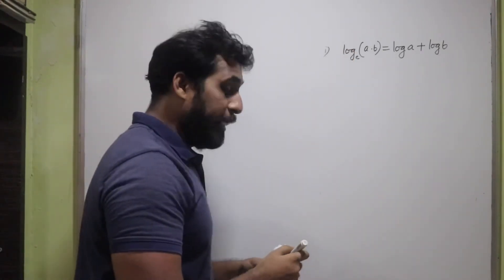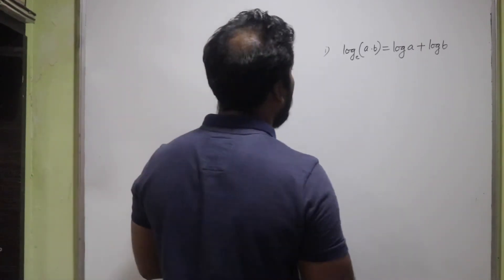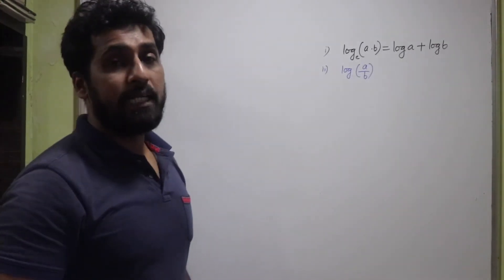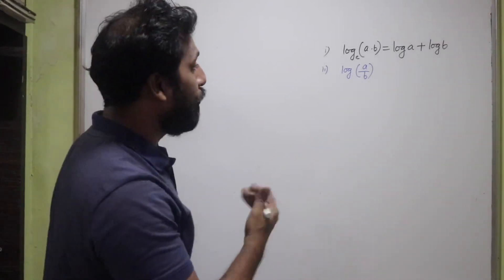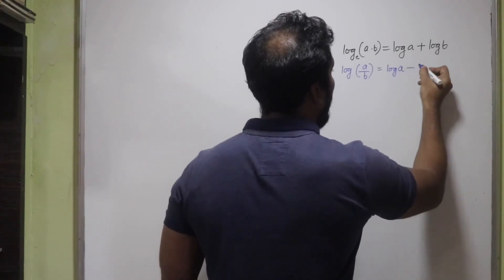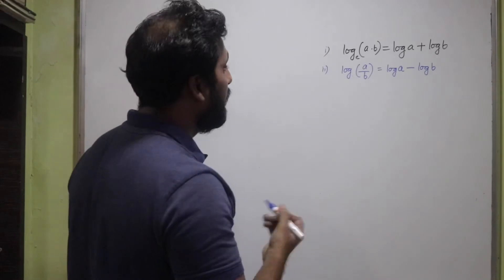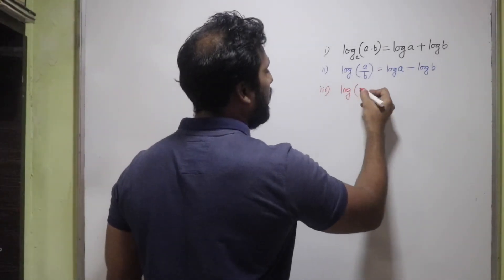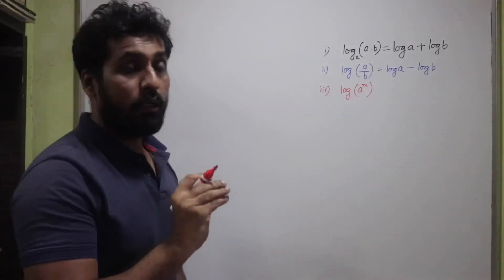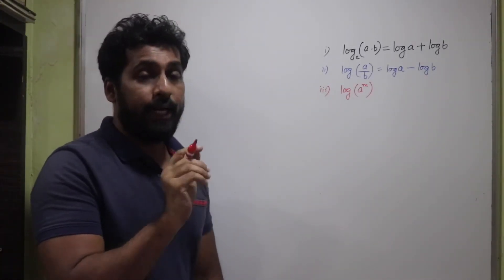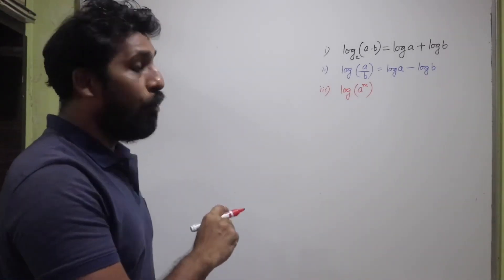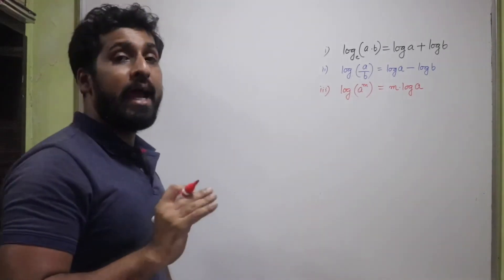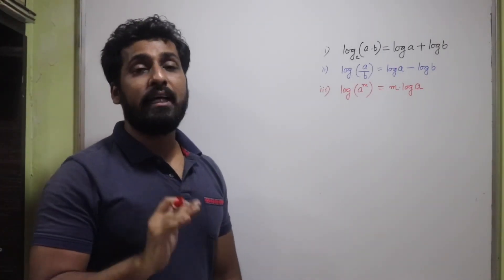The second formula: log(a/b) = log a − log b, where again the base is e by default. The third formula: log(aᵐ) = m·log a. The power m comes down in front. Whenever I don't write a base, the base is taken as e — always remember that.